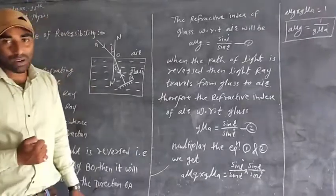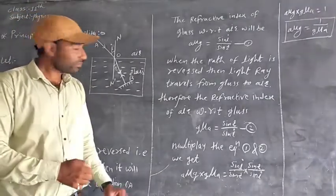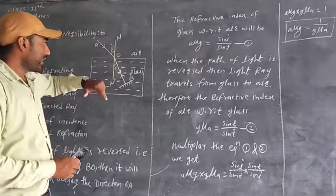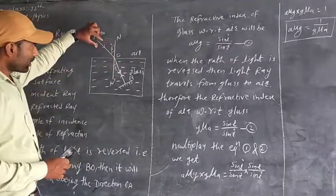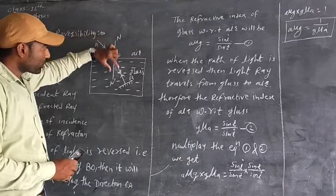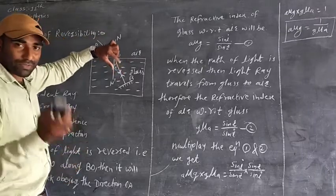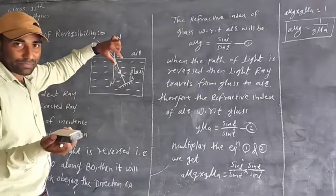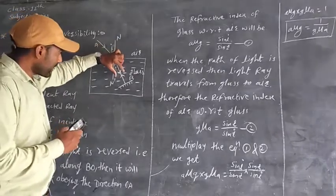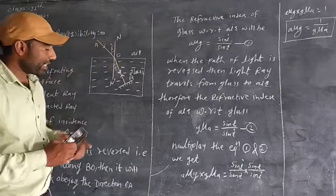This is the principle of reversibility. So, you get to know the same path. Then, if the path of a ray of light after any number of reflections and refractions returns, then the initial path is the same path.